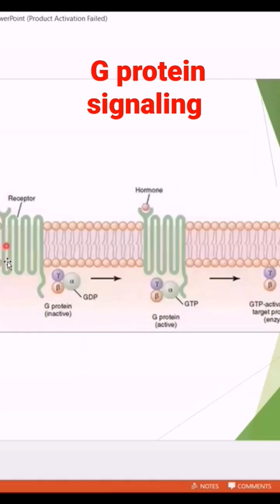As you can see, this is the receptor which is transmembrane. It loops in and out. It has an extracellular part and an intracellular part. This is a G protein. The G protein is in the inactive form. It has three subunits: alpha, beta, and gamma. In the inactive form, the alpha subunit is attached with GDP.